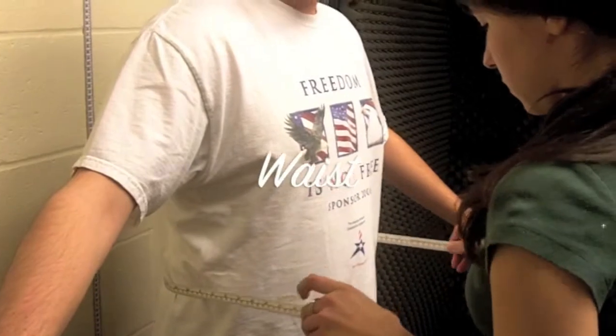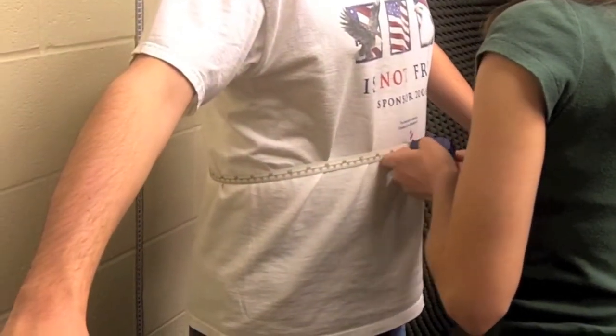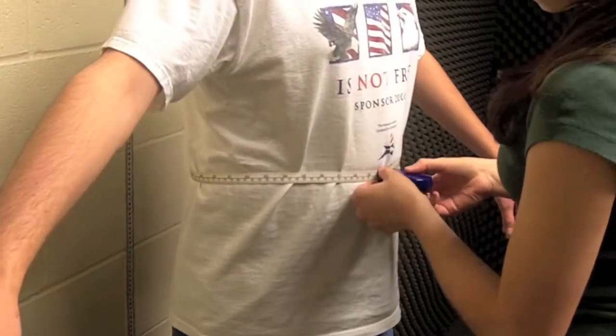How to measure waist circumference: Align looping tailors tape along the smallest part of the waist. Record waist circumference in centimeters. A simpler measuring tape can also be used for these measures.